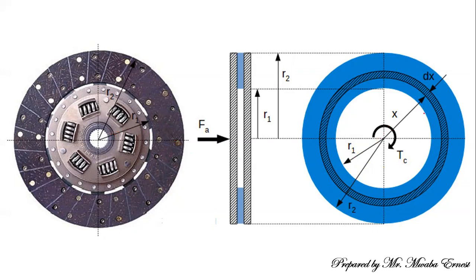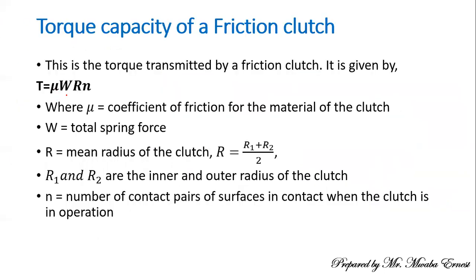You can get the average, or mean radius, between the inner and the outer radius by adding them and dividing by two — that is the one we will be interested in. Going back to the formula: we have the coefficient of friction (μ) for the material of the clutch, then the total spring force W. The total spring force refers to the force which helps us engage and disengage the clutch mechanism.